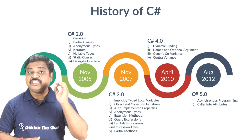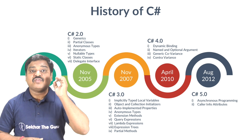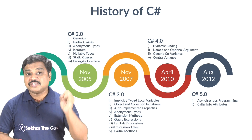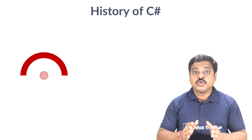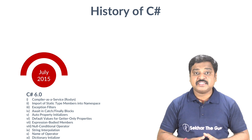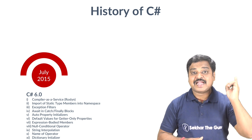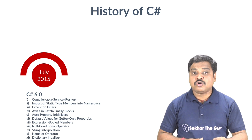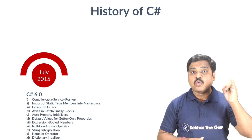In August 2012, C Sharp 5.0 was introduced with .NET Framework 4.5. C Sharp 6.0 was introduced with .NET Framework 4.6 with many features to improve coding efficiency, such as import of static type members into namespace, exception filters, await in catch and finally blocks, auto property initializers, and default values for getter-only properties.